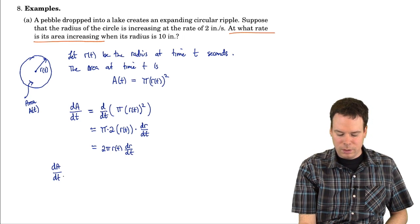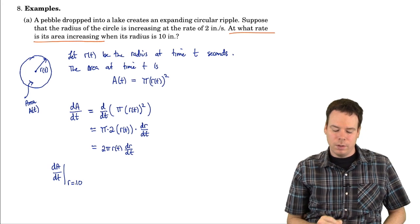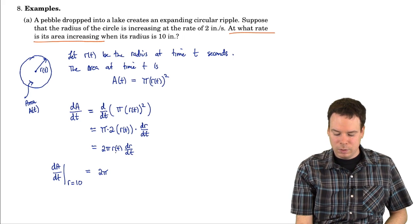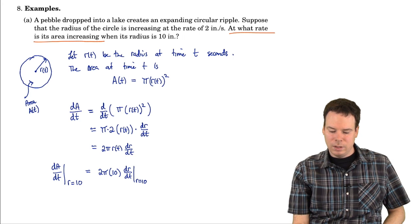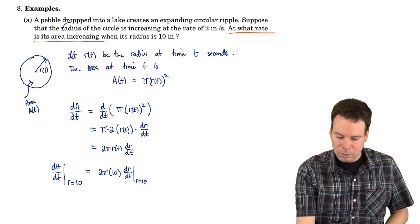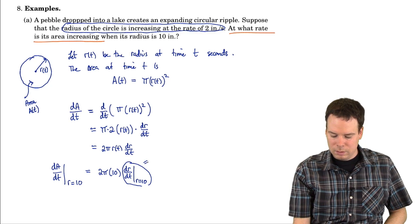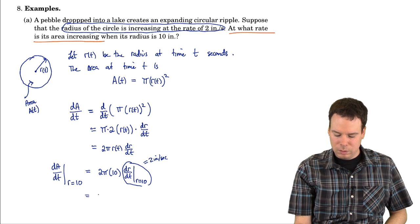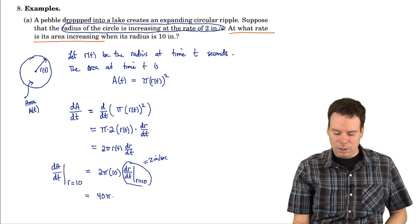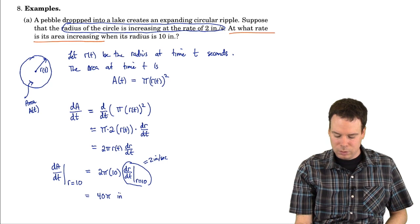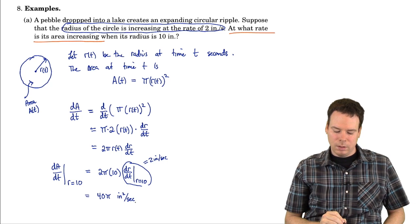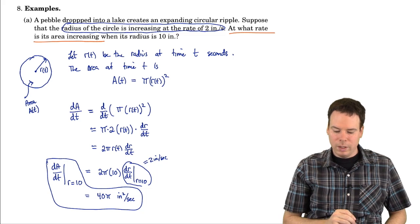That's the derivative in general. We'd like to know what the derivative is when r equals 10. That would be 2π times 10 times dr/dt when r is 10. From the question, the radius is increasing at a rate of 2 inches per second, so dr/dt equals 2. This gives us 2π times 10 times 2, which is 40π. Since this is the rate of change of area, the units are square inches per second.